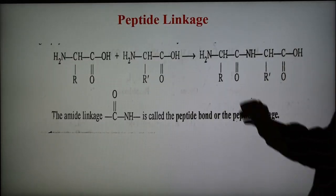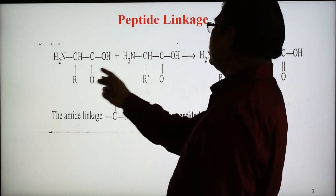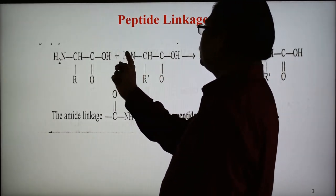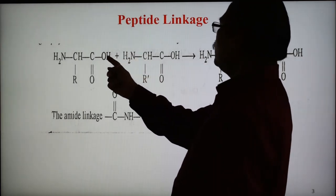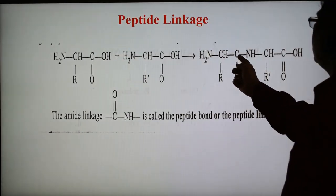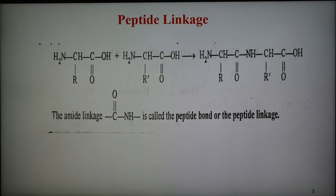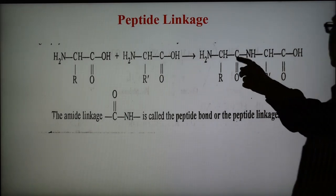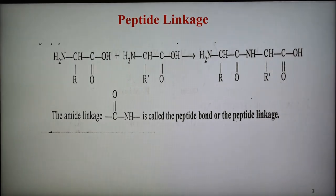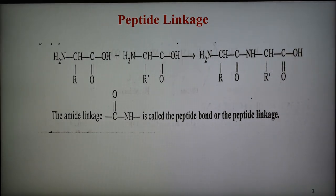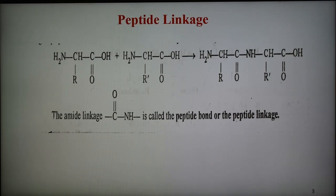Here is shown one amino acid and another — H from one and OH from the other — water gets eliminated, so there is a loss of OH and H. The CONH linkage is formed. This CONH is known as peptide linkage or peptide bond. In this way, two or more different amino acids combine, forming different types of compounds — dipeptide, polypeptide — which contain peptide linkage.